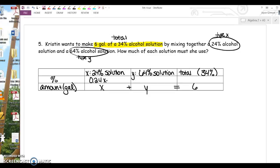Then for the 64% solution, 0.64Y will tell us how much of that amount of solution is actually pure alcohol. Add those together, and it needs to equal how much of our 6 gallons is actually pure alcohol. What did you guys get for that cell?